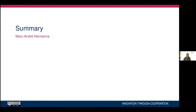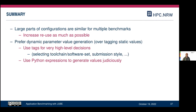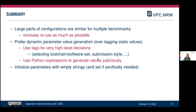The most important takeaways from this webinar: large parts of configurations are similar across multiple benchmarks, so increase reuse as much as possible. Prefer dynamic parameter value generation over static tagging. Use tags for very high-level decisions, like selecting a certain toolchain or submission style such as 'no_submit'. Use Python expressions to generate values judiciously during configuration. Finally, initialize parameters with empty strings, because otherwise you might have Python artifacts where a lookup returns None because there's no object behind what you're looking at.